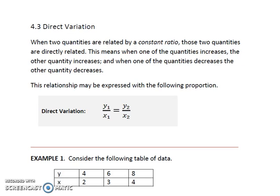Direct variation. When two quantities are related by a constant ratio, those two quantities are directly related. This means when one of the quantities increases, the other increases, and when one of the quantities decreases, the other decreases.